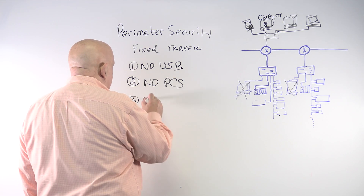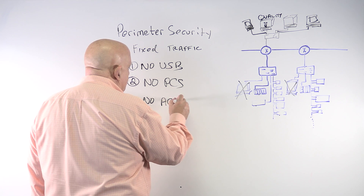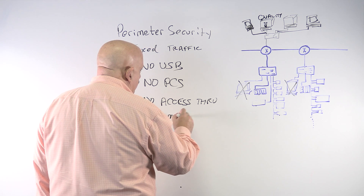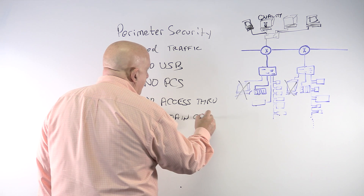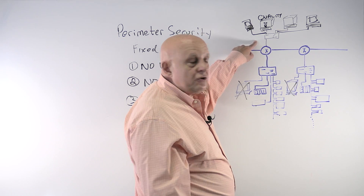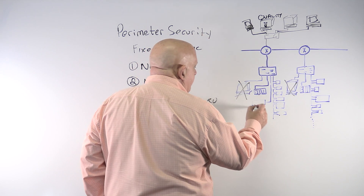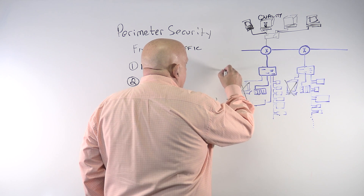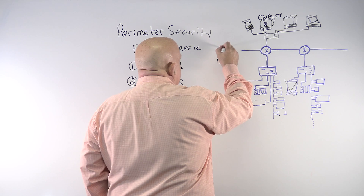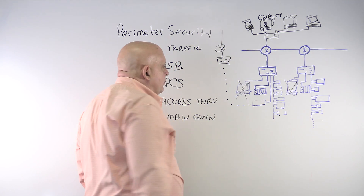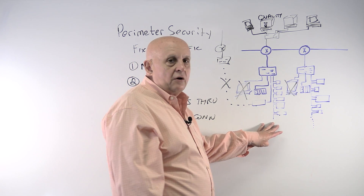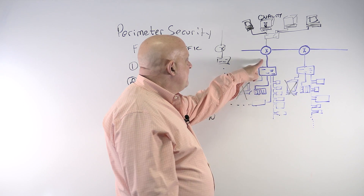The third requirement is no access except through the main connection — the main router. The only access to the enterprise or IT is through this router. We can't have any device connected to some other switch somewhere, going who knows where. Everything inside has to go through this one connection.